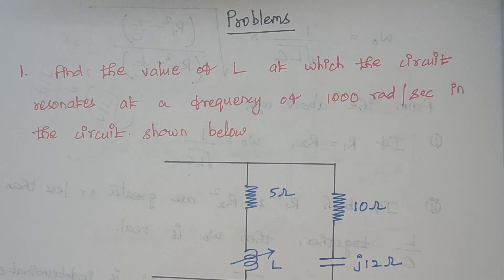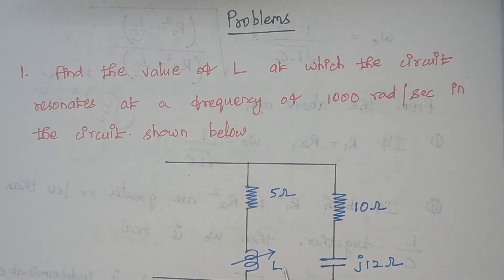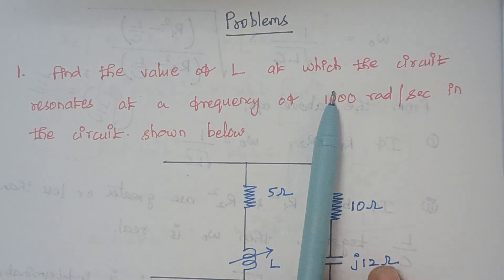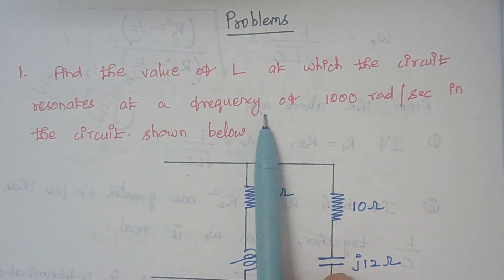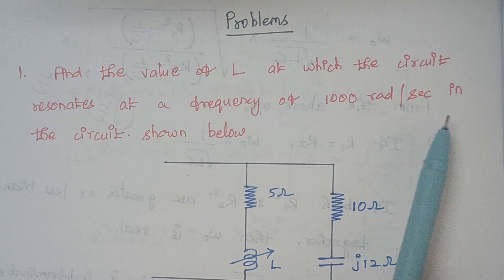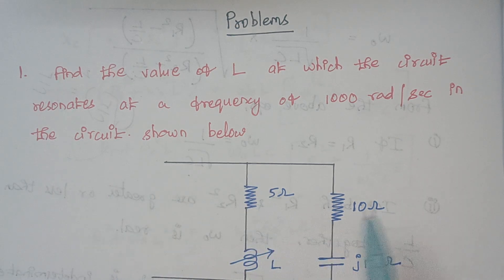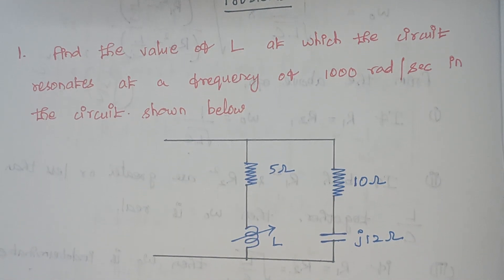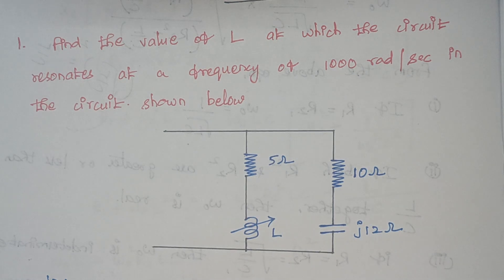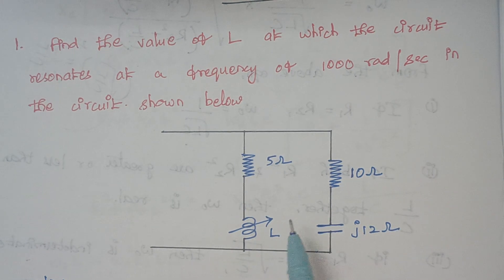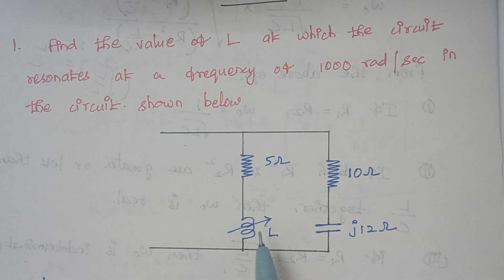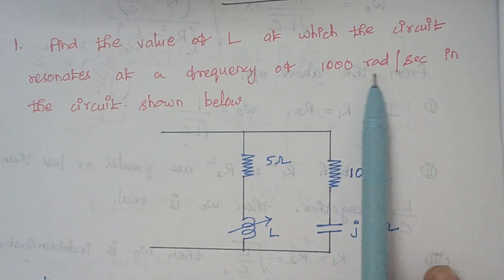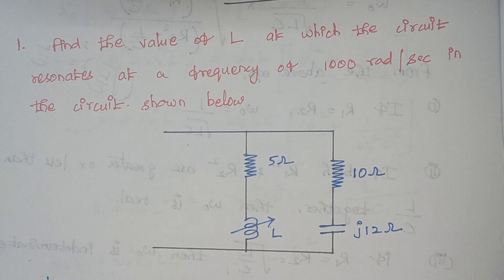Hello viewers, I am Kousalya. Today we are going to discuss problems related to parallel resonance. The first problem is: find the value of L at which the circuit resonates at a frequency of 1000 radians per second in the circuit shown below. Here we have a parallel resonance circuit and we have to find the value of L, where the resonant frequency is 1000 radians per second.